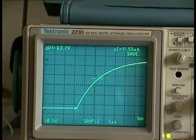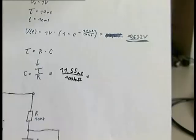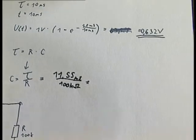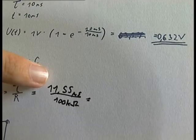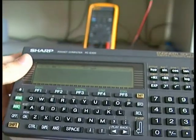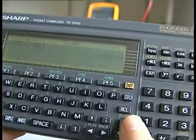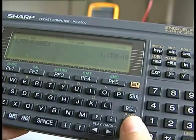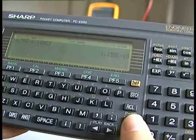Now we need to know the time between these two points, and this is 11.55 microseconds. You can zoom in a bit more for a better measurement. Now let's put that into the calculator: 11.55 microseconds divided by 100k ohms gives us one hundred and fifteen picofarads.